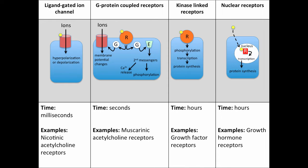Kinase-linked receptors, when bound to ligand, promote phosphorylation of proteins, gene transcription, and protein synthesis. These events generally take hours, and an example of a kinase-linked receptor are growth factor receptors. Finally, we have nuclear receptors. In this case, the ligand actually traverses the membrane and makes its way into the nucleus where it binds to a nuclear hormone receptor. This receptor-ligand complex can then alter transcription, ultimately altering protein synthesis. This signaling cascade generally takes hours, and an example of a nuclear receptor are growth hormone receptors.